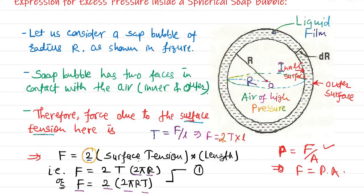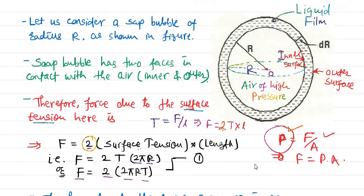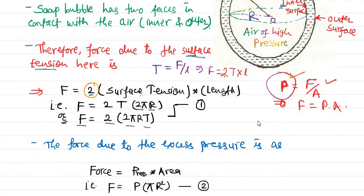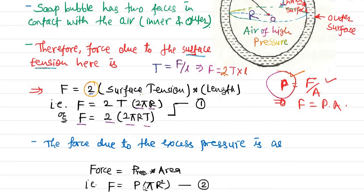We know there is a counterbalancing force which is due to the excess pressure inside the bubble. That force is simply force equals pressure into area. The pressure is P, and the area of the circular cross-section is πr², so the force due to excess pressure equals P × πr².